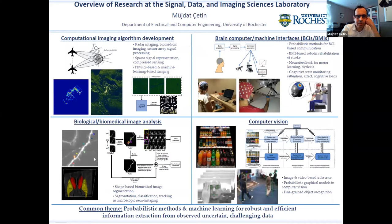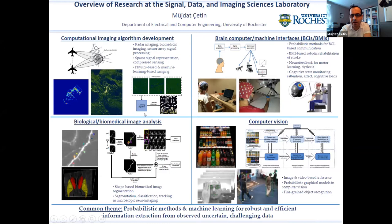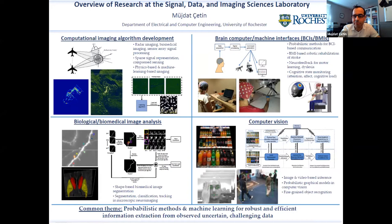Before getting into today's talk, I'll give you an overview of work in my group, the Signal Data and Imaging Sciences Laboratory at the University of Rochester. There are currently four research thrusts: computational imaging, which is the topic of today's talk; biomedical image analysis, which is an area where I had the privilege of collaborating with Tolga; computer vision; and brain-computer and brain-machine interfaces, with links to areas like augmented and virtual reality. The common aspect across all of this is that we have complicated data and we are interested in extracting information using probabilistic methods and machine learning.